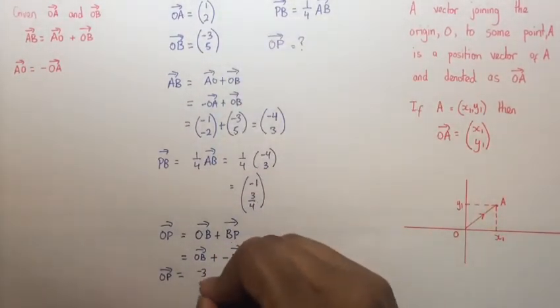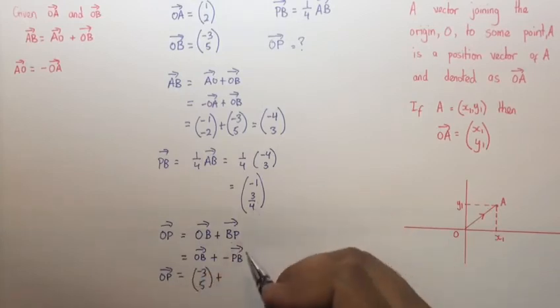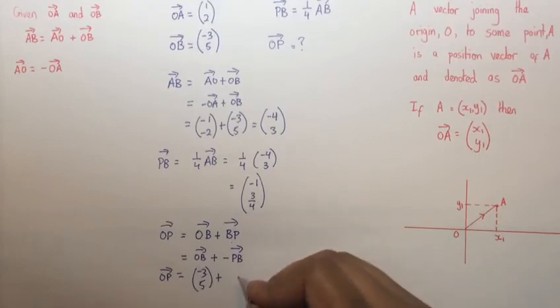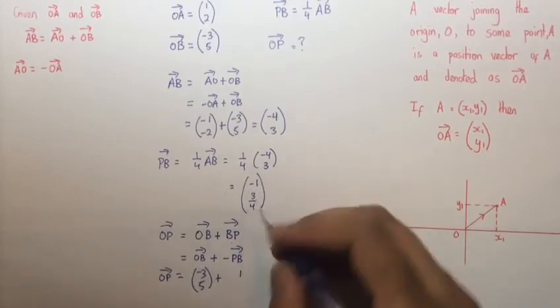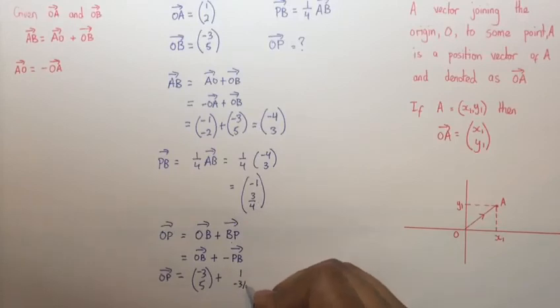Plus minus PB which is equal to minus of (-1, 3/4) which equals (1, -3/4).